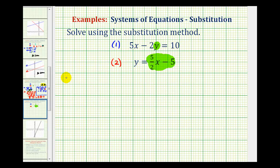So by performing this substitution, equation one would be five x minus two times, instead of y, we'll have two times five halves x minus five equals ten. Again, notice how we have an equation with one variable, in this case x. So now, we'll solve this equation for x, and then perform back substitution to determine the value of y.